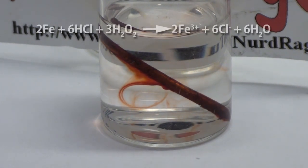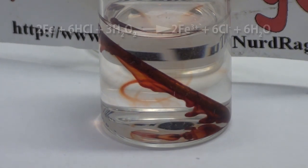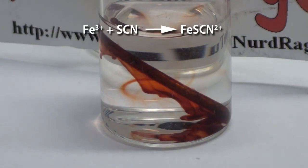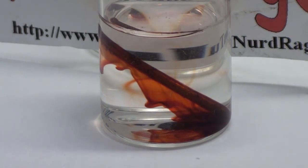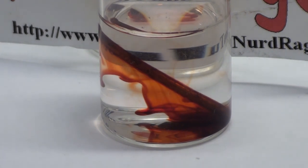What's happening is first the hydrochloric acid and hydrogen peroxide are reacting with the iron to produce iron 3 ions. These ions then react with the thiocyanate ions to produce iron thiocyanate ions. These ions are red in color and give the appearance of blood.